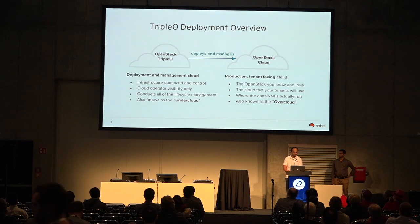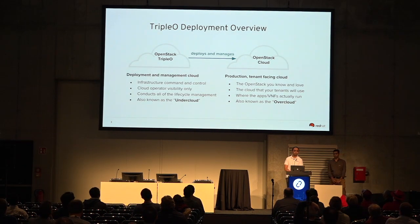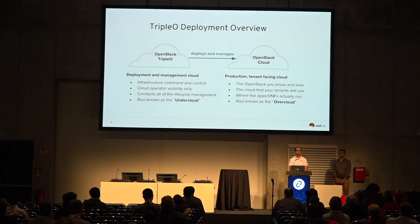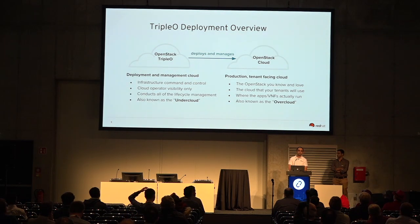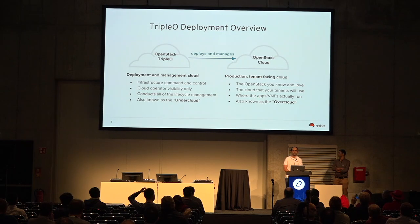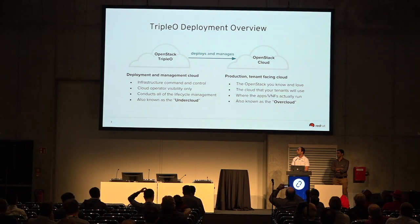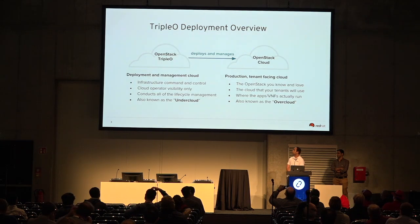A quick note about TripleO. With TripleO we have two clouds: the undercloud, which is the operator-facing cloud, and the overcloud, which is the tenant-facing cloud. In a typical deployment, we use the undercloud and deploy it first, which is then used to deploy and manage the overcloud.